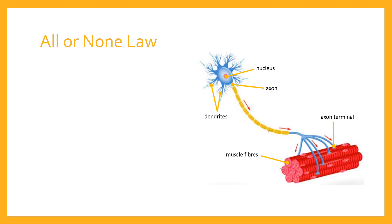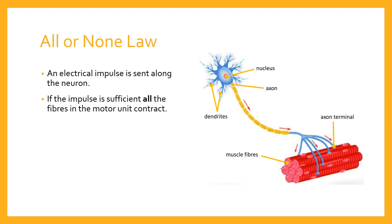Importantly, we have something called the all-or-none law, which helps us explain how motor units are recruited in order to make muscles contract. A muscle is made up of a group of motor units, each innervated by their own neurons. An electrical impulse is sent along the neuron, reaches the axon terminal and then either innervates the fibres or doesn't. Only if the impulse is sufficient — if there's sufficient electrical impulse passing along — then all of the fibres in that motor unit will contract.